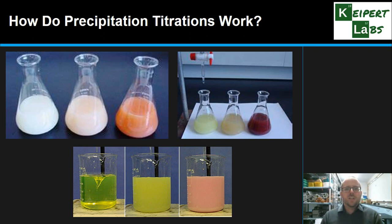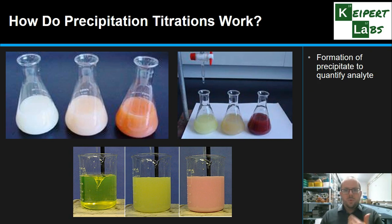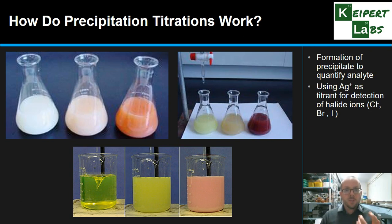So how does a precipitation titration actually work? What is it specifically about this technique that makes it useful? You can see here some photos of the three different types of this sort of reaction. It's essentially the idea of the formation of a precipitate to help quantify the analyte — the thing we're looking for. So rather than neutralisation like an acid and base, we're looking at the formation of a specific amount of precipitate. Typically we're looking at the reaction between silver ions and halide ions, like chloride, bromide, or iodide, because we know that silver chloride, bromide, and iodide are insoluble.